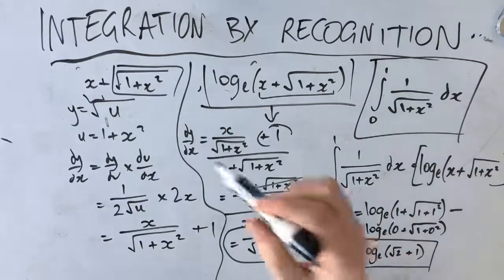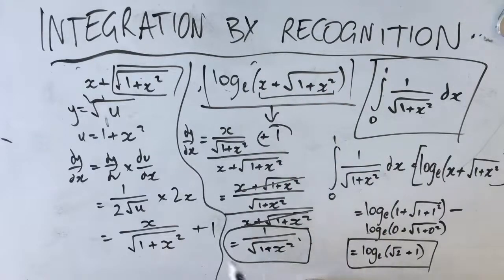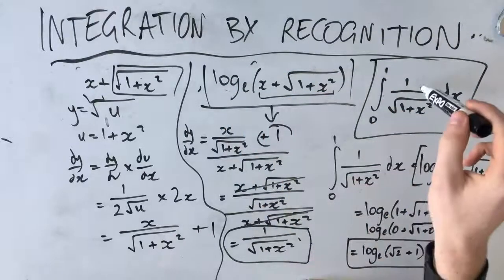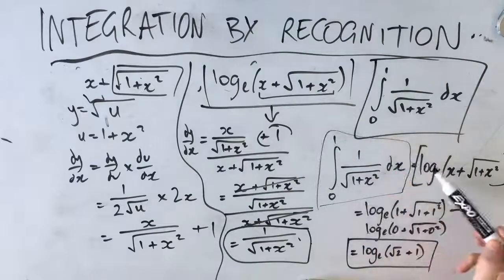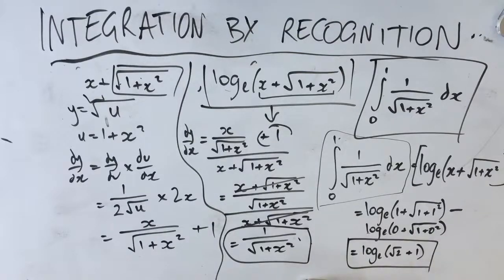To summarize: we found the derivative of the inner expression, which let us find the derivative of the log, which gave us 1/root(1 + x²). That meant the antiderivative was log_e(x + root(1 + x²)), so we could evaluate the definite integral by substituting x = 1 and x = 0. That's integration by recognition. Please let me know if you have any questions — thanks for watching, guys.